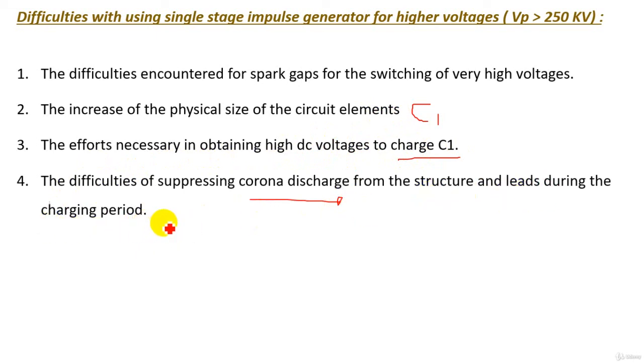So the solution for obtaining higher impulse voltage is using a multi-stage impulse generator or Marx generator or Marx circuit. And this multi-stage impulse generator will be discussed in the next lecture.